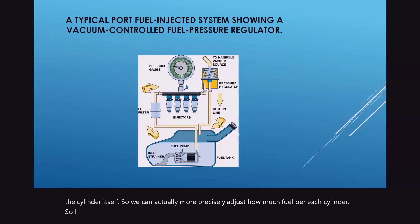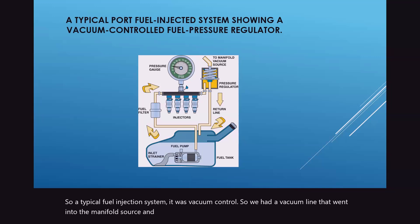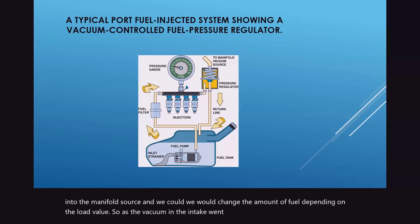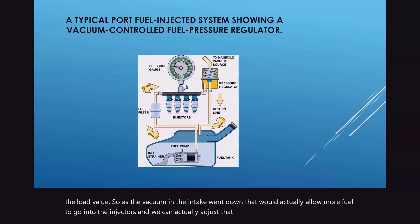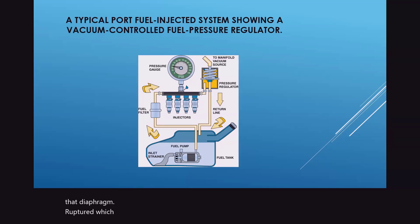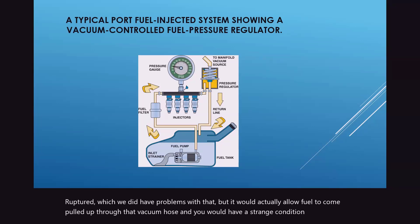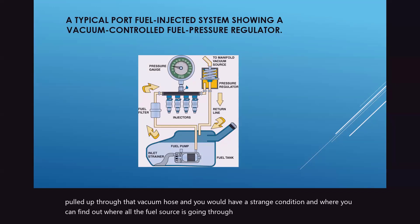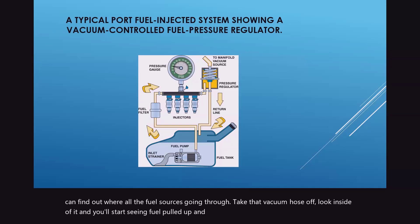A typical fuel injection system was vacuum controlled — a vacuum line went to the intake manifold and we changed the amount of fuel depending on load value. As vacuum in the intake went down, that would allow more fuel to go into the injectors. One downside is if that diaphragm ruptured, which did happen — fuel would be pulled up through that vacuum hose, causing a strange condition. If you pull that vacuum hose off and see fuel inside it, you have a leaking or torn diaphragm.